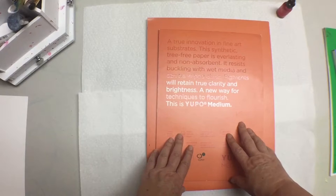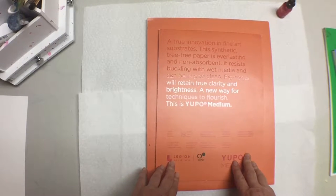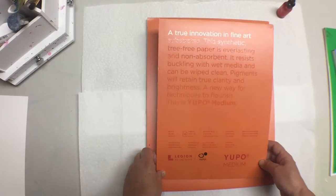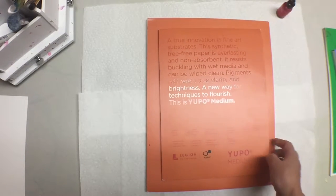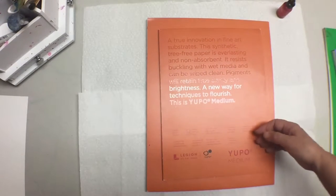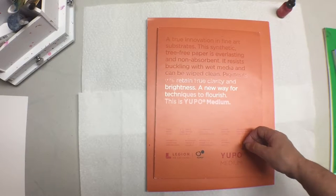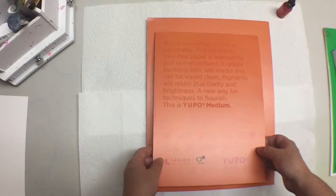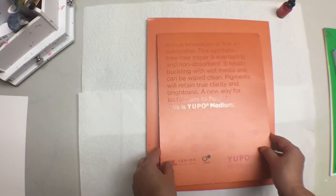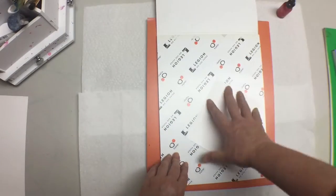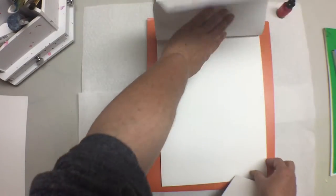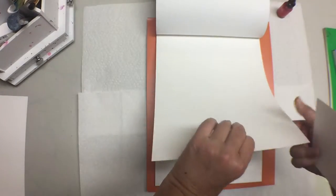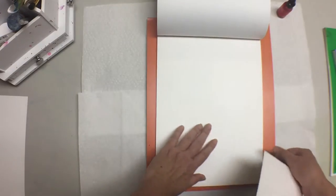This is Yupo Paper. Yupo Paper is the substrate, the background of choice for most people that use alcohol inks. The reason for that is that alcohol inks need a non-porous surface and that's what Yupo Paper is. It's a plasticized paper so that the ink does not get absorbed into it.